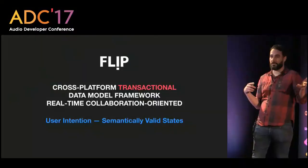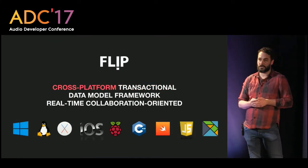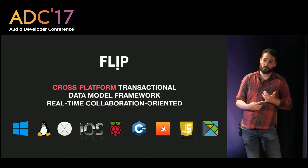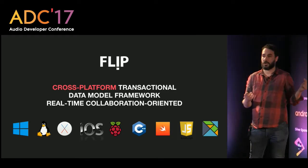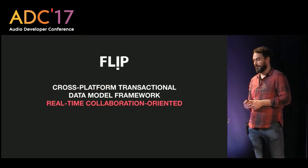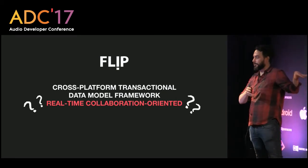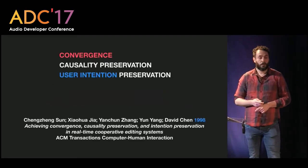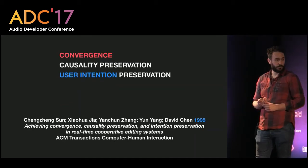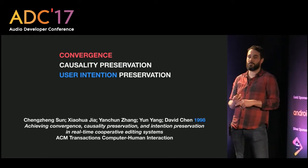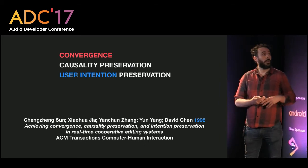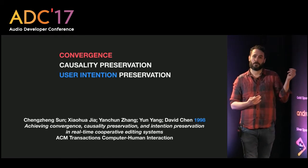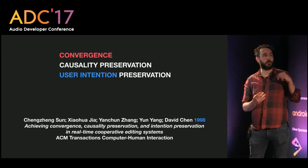Flip is a data model framework — it's transactional, meaning it captures user intention and ensures semantically valid states. It's cross-platform, supporting Windows, Linux, macOS, iOS, and even Raspberry Pi. Though written in C++, it has language bindings for Swift, JavaScript, and even functional languages like Elm. It's also real-time collaboration oriented, grounded in what's called the CCI model, introduced in 1998 by Sun and Chengen — considered the father of operational transformation.